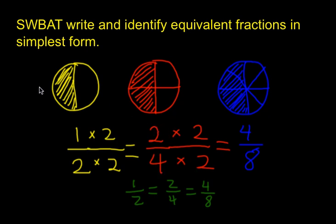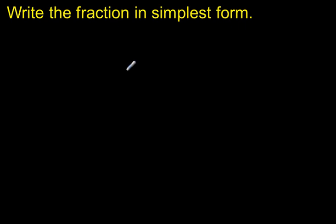Today, we're going to be focusing on a special type of equivalent fraction called simplest form. Simplest form means you're writing the fraction with the least amount of pieces as possible. You can also tell if a fraction is in simplest form if its only common factor is 1.